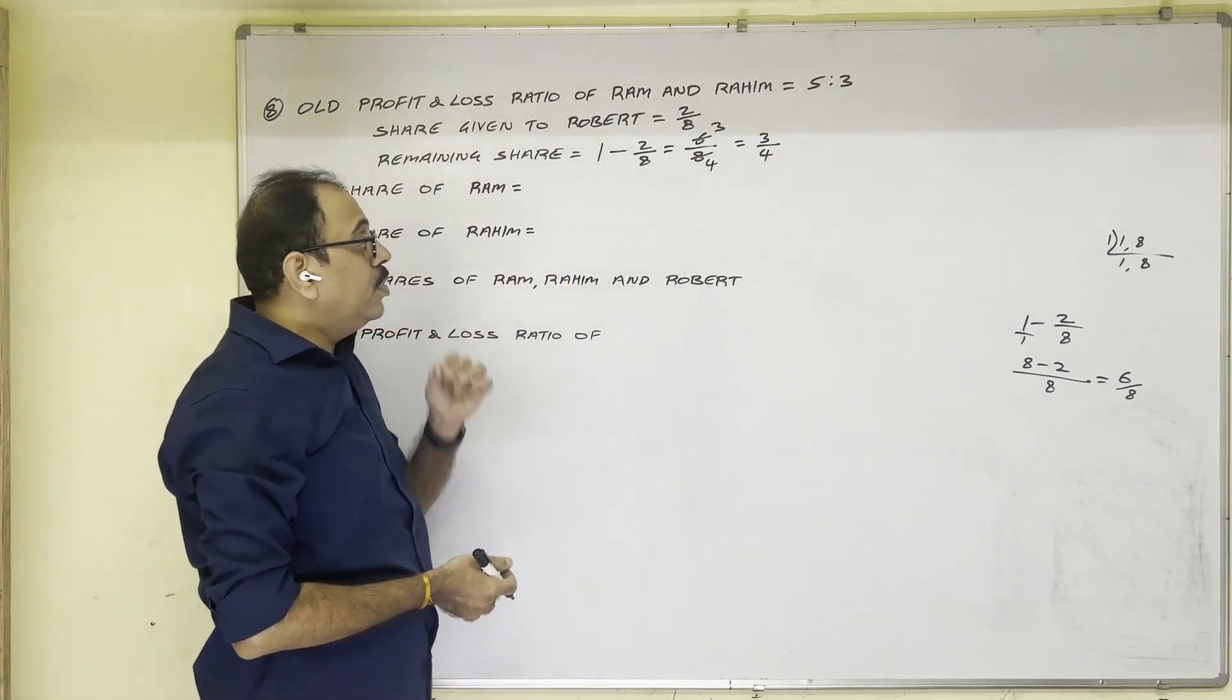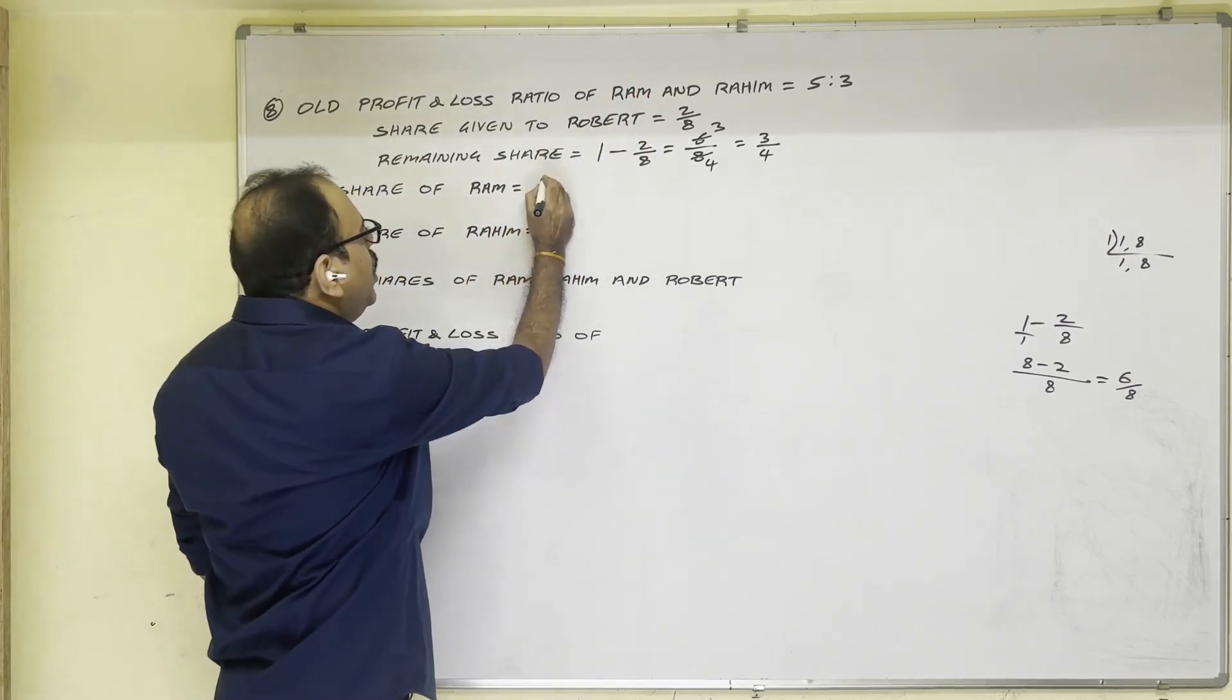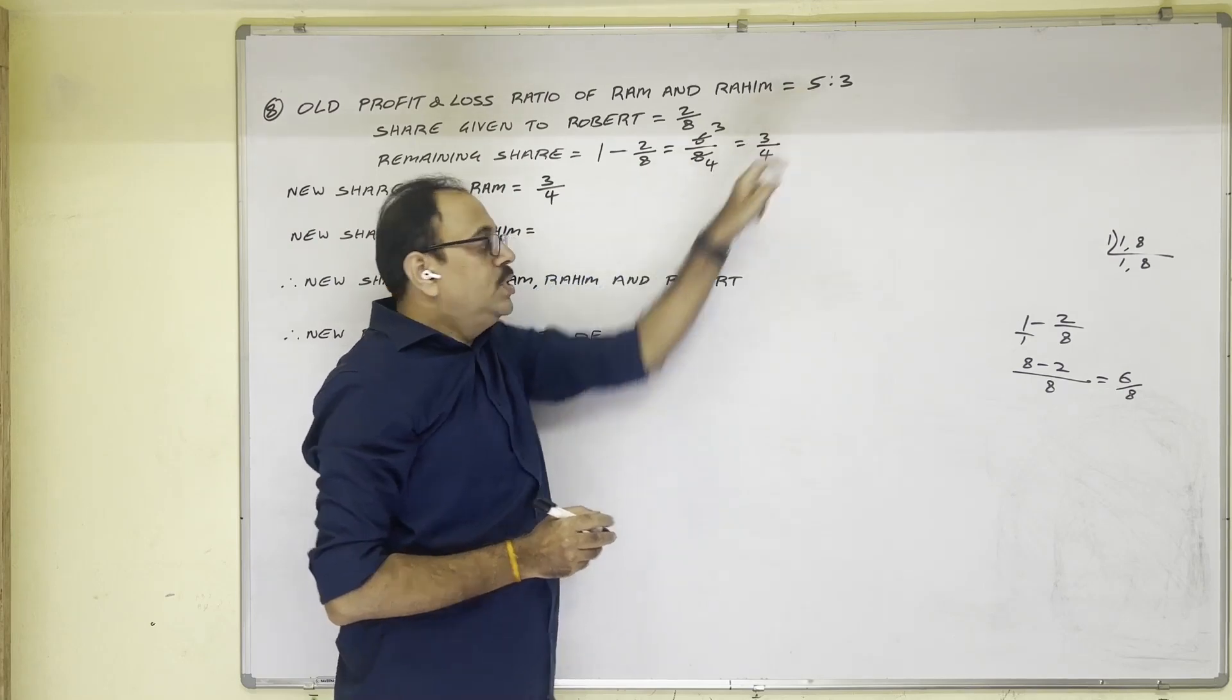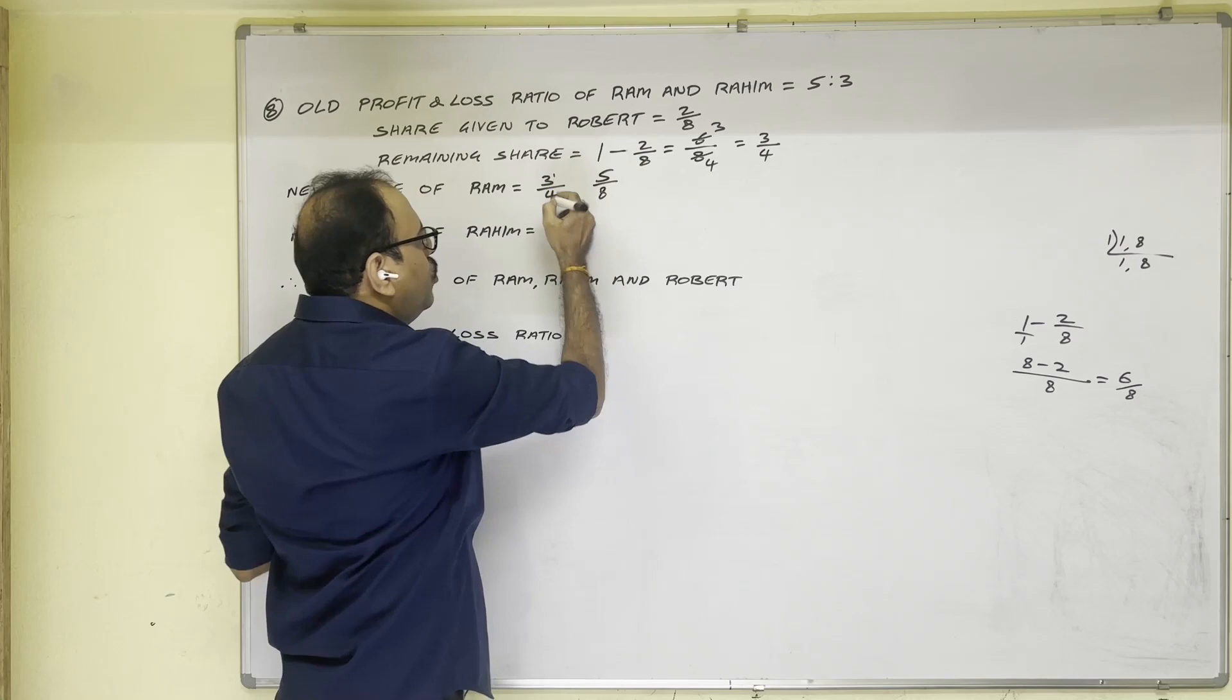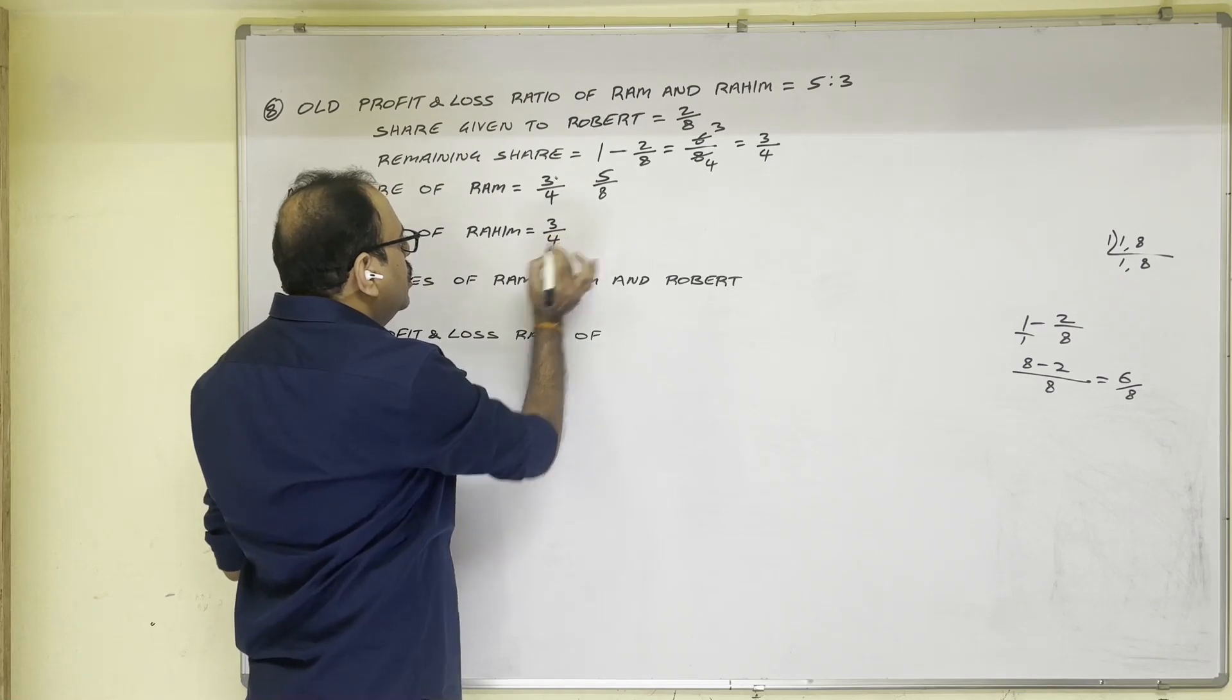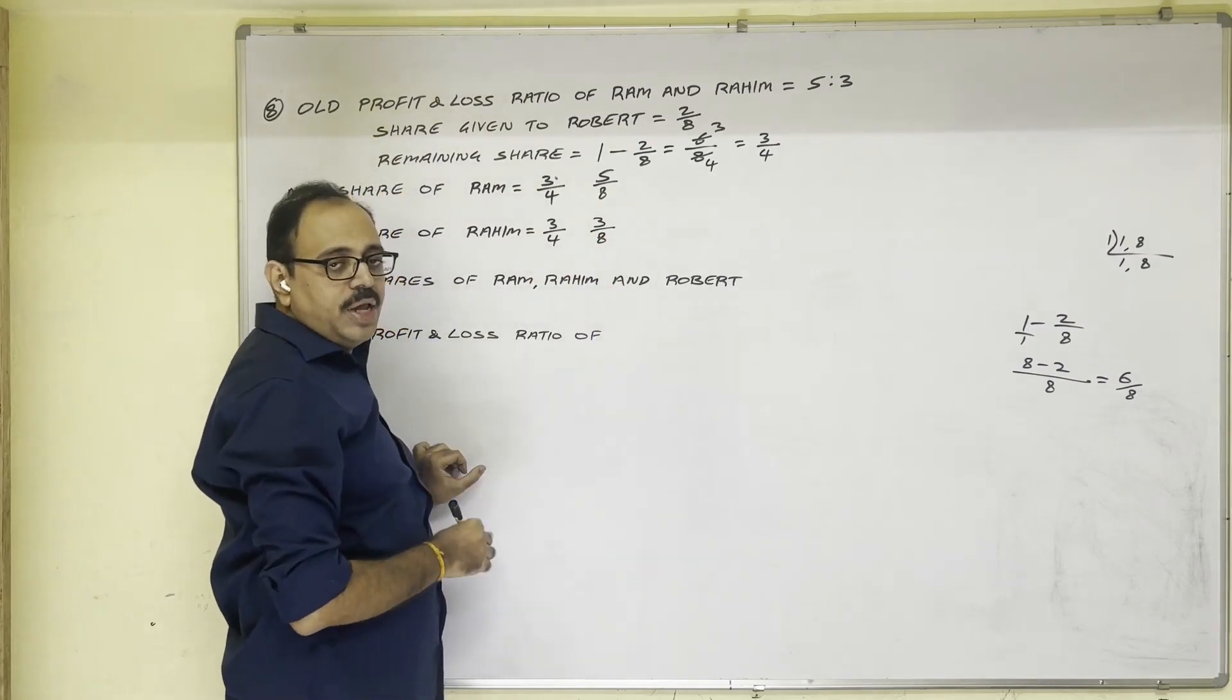So this 3/4, who takes now? Old partners. How they take? In this remaining share 3/4, Ram takes 5/8. So 5/8th of 3/4th Ram takes. Similarly, in remaining share Rahim takes 3/8. 3/8th of 3/4th Rahim takes.